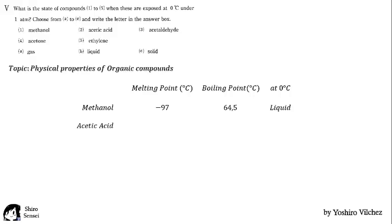For acetic acid, the melting point is 16.6 and the boiling point is 118, so at 0 degrees Celsius, acetic acid is a solid.